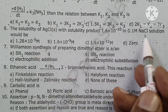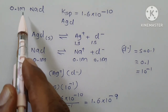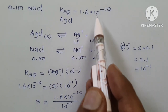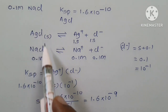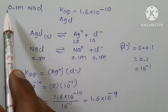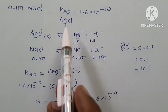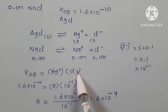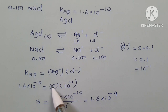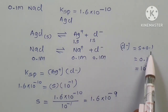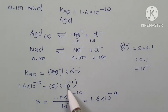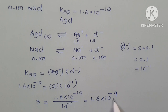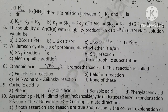The solubility of silver chloride with solubility product Ksp = 1.6×10⁻¹⁰ in 0.1 M NaCl solution: AgCl dissociates to give Ag⁺ and Cl⁻. NaCl also gives Cl⁻ at 0.1 M concentration. Molar solubility S = 1.6×10⁻¹⁰ divided by 10⁻¹ = 1.6×10⁻⁹.